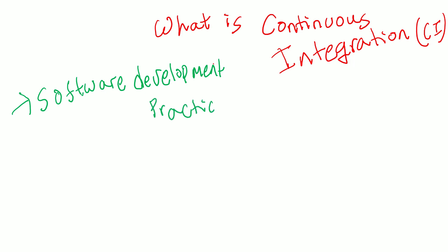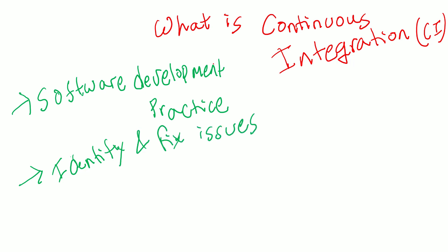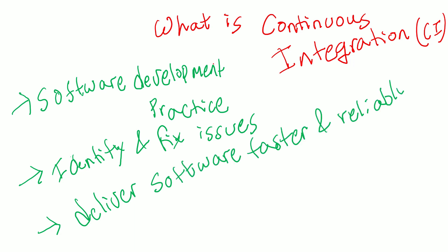The idea behind CI is to identify and fix issues early in the development process before they become a major problem. This can help teams to deliver software faster and more reliably and reduce the risk of delays or disruptions.